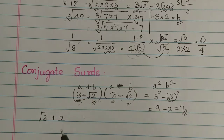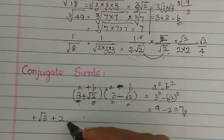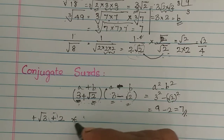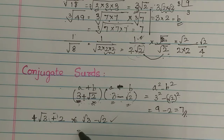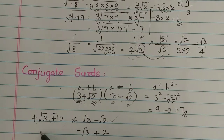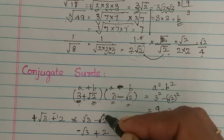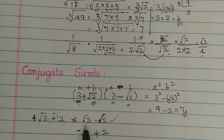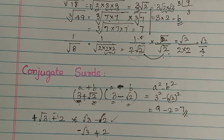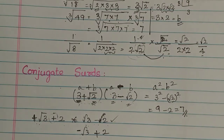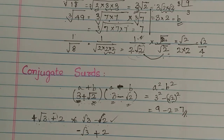So if you have root 3 plus 2, the conjugate is root 3 minus 2. If you have root 3 minus root 2, this is a conjugate pair. If you have root 3 plus root 3, the conjugate is minus root 3. So 2 plus root 3 — the conjugate is 2 minus root 3. In addition or subtraction with surds, we use conjugates. You will see how to handle such sums in the next video. That's all.